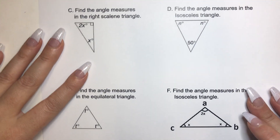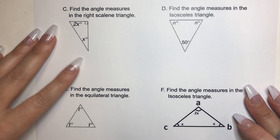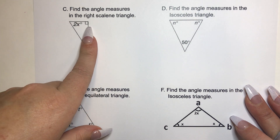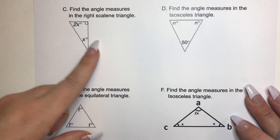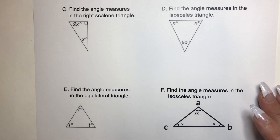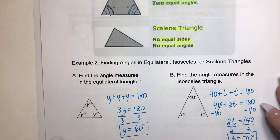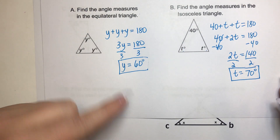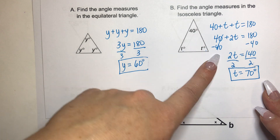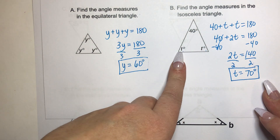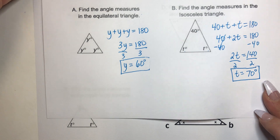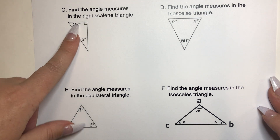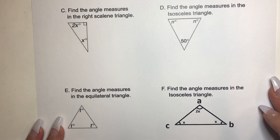Now find the angle measures in a right scalene triangle. It's right, which means there's a 90-degree angle, and it's scalene, which means every single angle has a different measure. Unlike before where each angle was the same variable, with this scalene triangle we not only have to figure out what X is, but also what each individual angle measure is at the end of the problem.